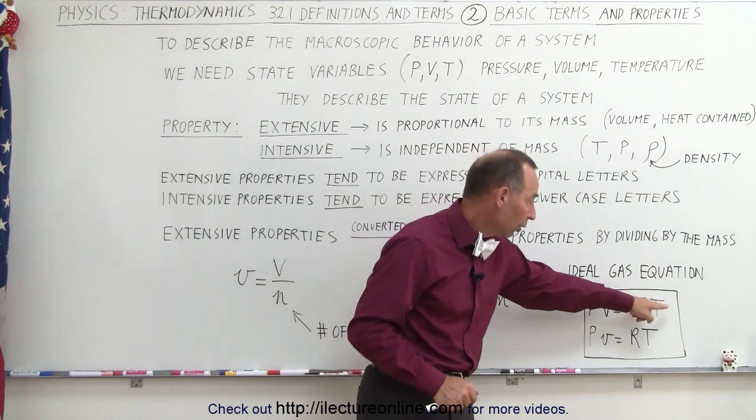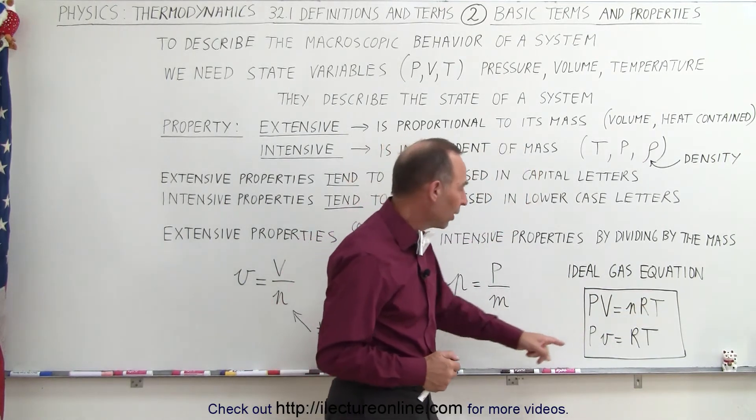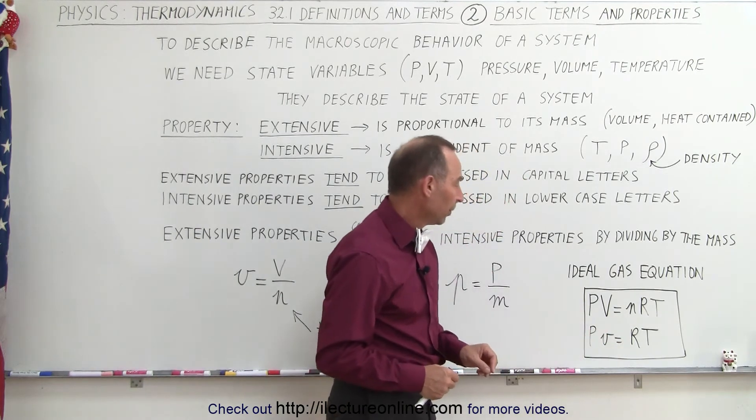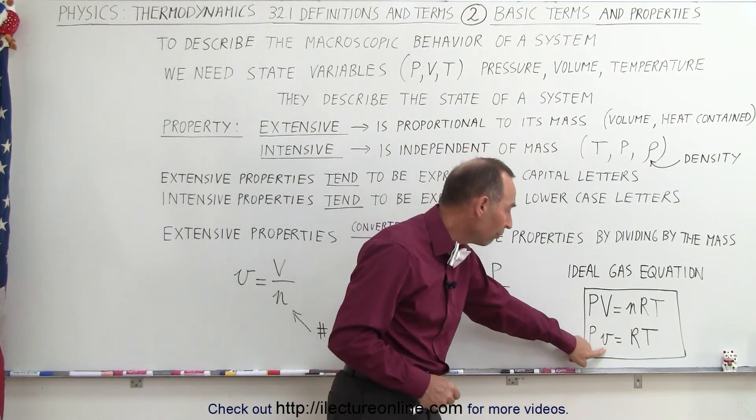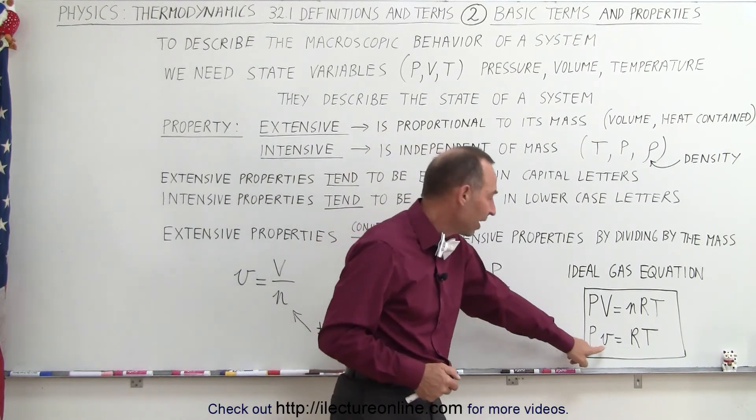If we divide both sides of the equation by the number of moles, now we have P times small v equals RT. It's the exact same equation, except in this case, v becomes what we call the intensive property.